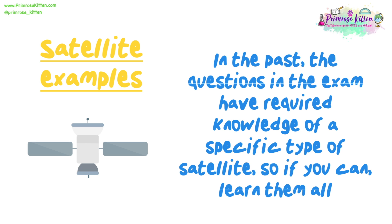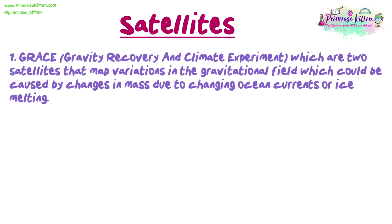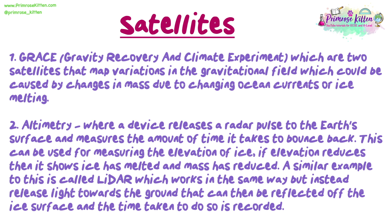In the past, the questions in the exam have required knowledge of a specific type of satellite, so if you can, learn them all. One example is the GRACE — the Gravity Recovery and Climate Experiment — which are two satellites that map variations in the gravitational field, which could be caused by changes in mass due to changing ocean currents or ice melting. Another example is altimetry, where a device releases a radar pulse to the Earth's surface and measures the amount of time it takes to bounce back. This can be used for measuring the elevation of ice. If elevation reduces, then it shows ice has melted and mass has reduced.